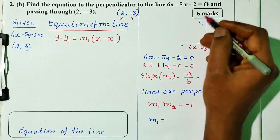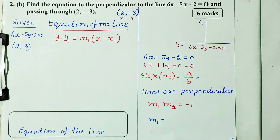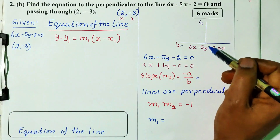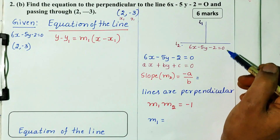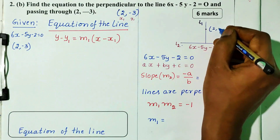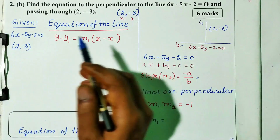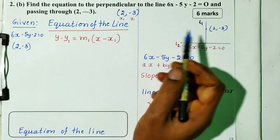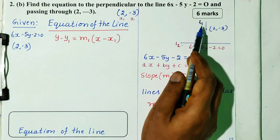We will name L1 and L2. Find the equation of the perpendicular to the given line — one line is there, and the equation of the second line perpendicular to it passing through (2, minus 3). The equation of line formula is y minus y1 equal to m1 into x minus x1. The passing point is (x1, y1).